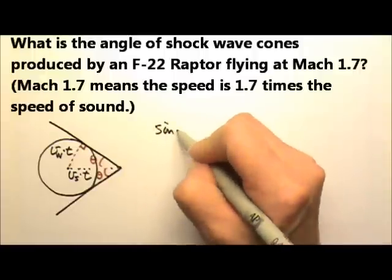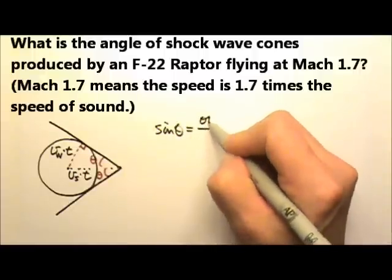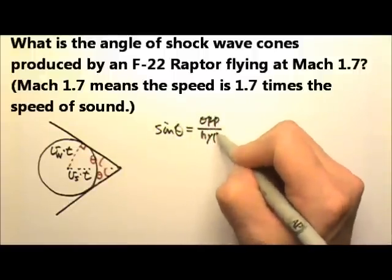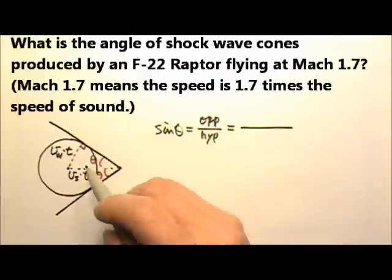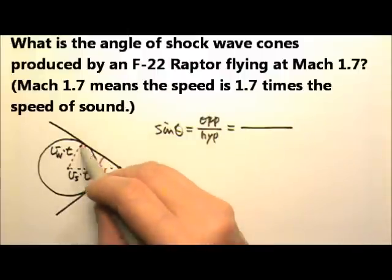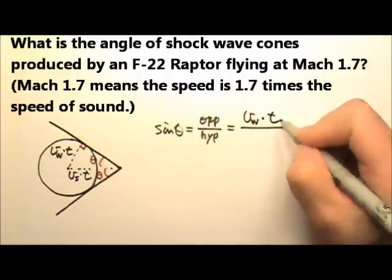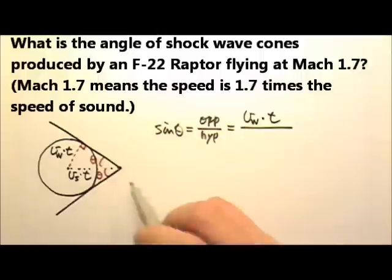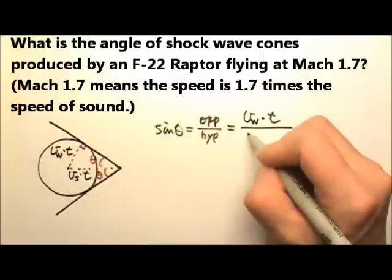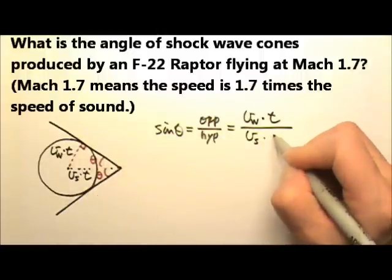This means sine theta, which is the opposite side divided by the hypotenuse, would equal the opposite side, speed of the wave, in this case a sound wave, times time. The hypotenuse equals the speed of the wave source times time.